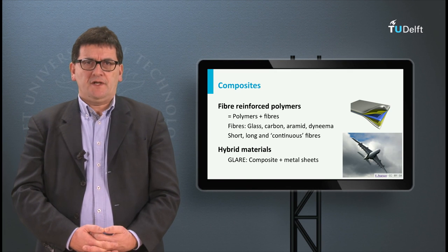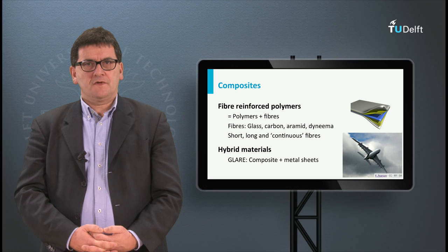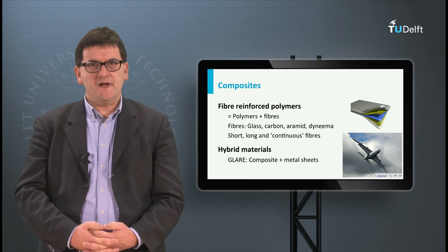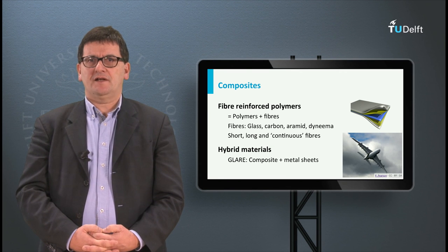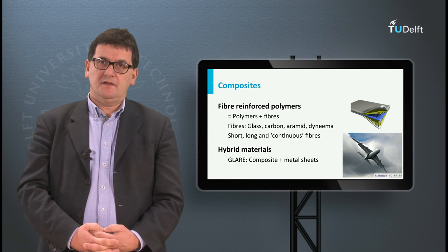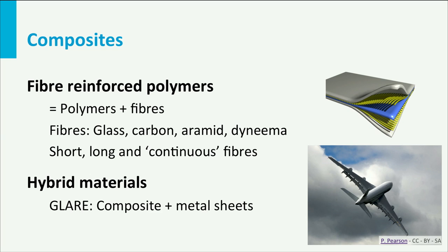The next material category is composites. Composites are composed materials — materials made of more than one constituent. Often a composite is made of fibers and a resin or matrix, and the resin is a polymer. For the fibers we can choose between different types: glass fibers, carbon fibers, or synthetic fibers like aramid or Dyneema fibers. Fibers are also available in different lengths: short fibers of a few millimeters, long fibers of a few centimeters, and so-called continuous fibers with a length of meters.